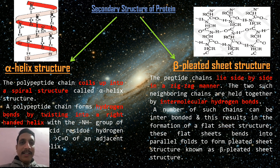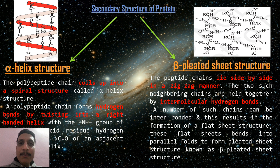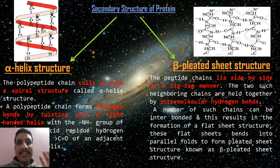In simple terms: in alpha helix structure the polypeptide chain coils into a spiral structure, and hydrogen bonds between NH and C=O groups hold it together. In beta pleated sheet structure, polypeptide chains lie side by side in a zigzag fashion, and again these chains are held together by hydrogen bonds between C=O and NH. These are the two types of secondary structure.